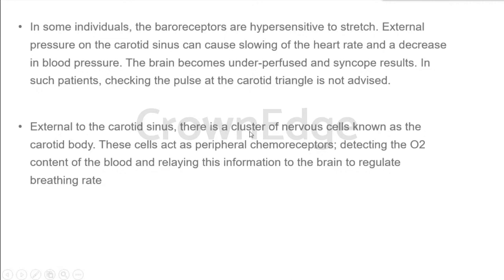External to the carotid sinus there is a cluster of nerve cells known as the carotid body, which is associated with chemoreceptors. Chemoreceptors detect the oxygen content of the blood, and this information is relayed to the brain to regulate your breathing rate. Chemoreceptors are associated with oxygen content of the blood, and baroreceptors check the pressure of the blood. To remember: blood pressure is baroreceptors — that is the carotid sinus. The carotid body is for chemoreceptors, detecting oxygen content and regulating breathing rate, which is very important for maintaining normal blood pressure.